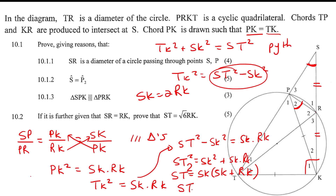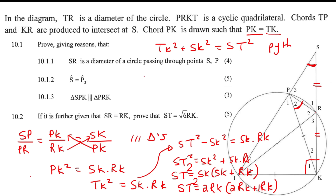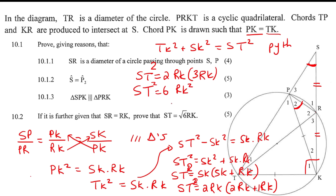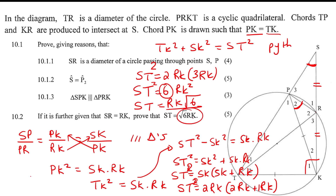So we end up with ST squared equals 2RK multiplied by the bracket 2RK plus RK, which is 2RK multiplied by 3RK, giving us 6RK squared. Taking the square root, ST equals the square root of 6 times RK. And there we have it — that's not the easiest one; it took a while to see, but that's how you handle something like that.